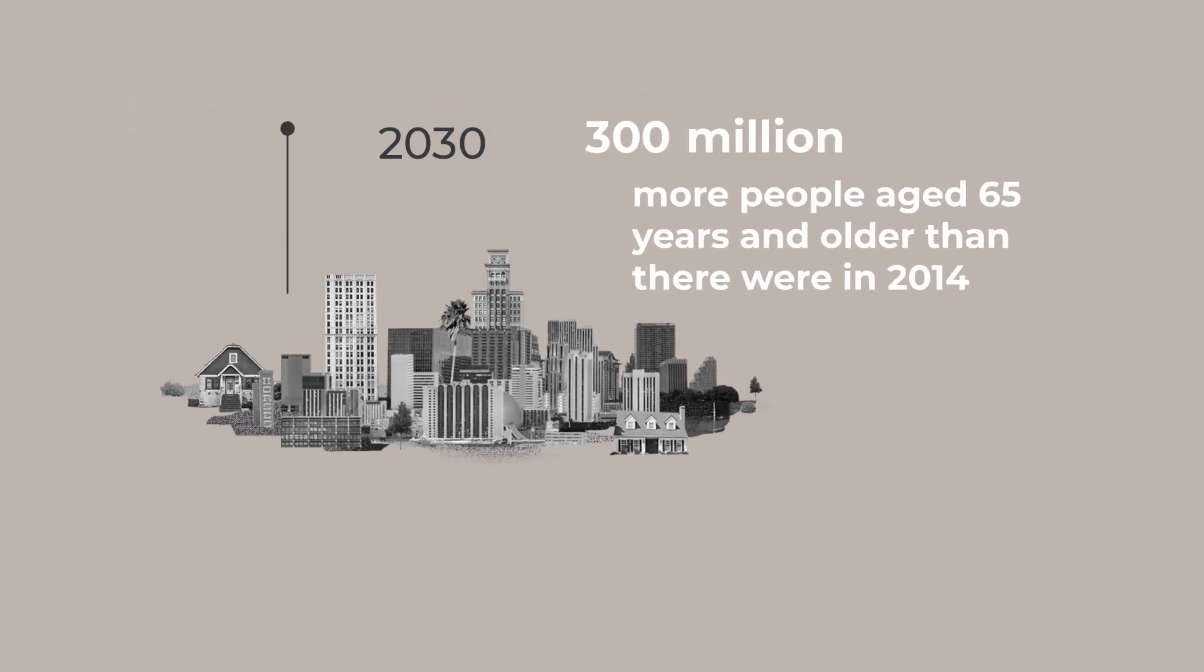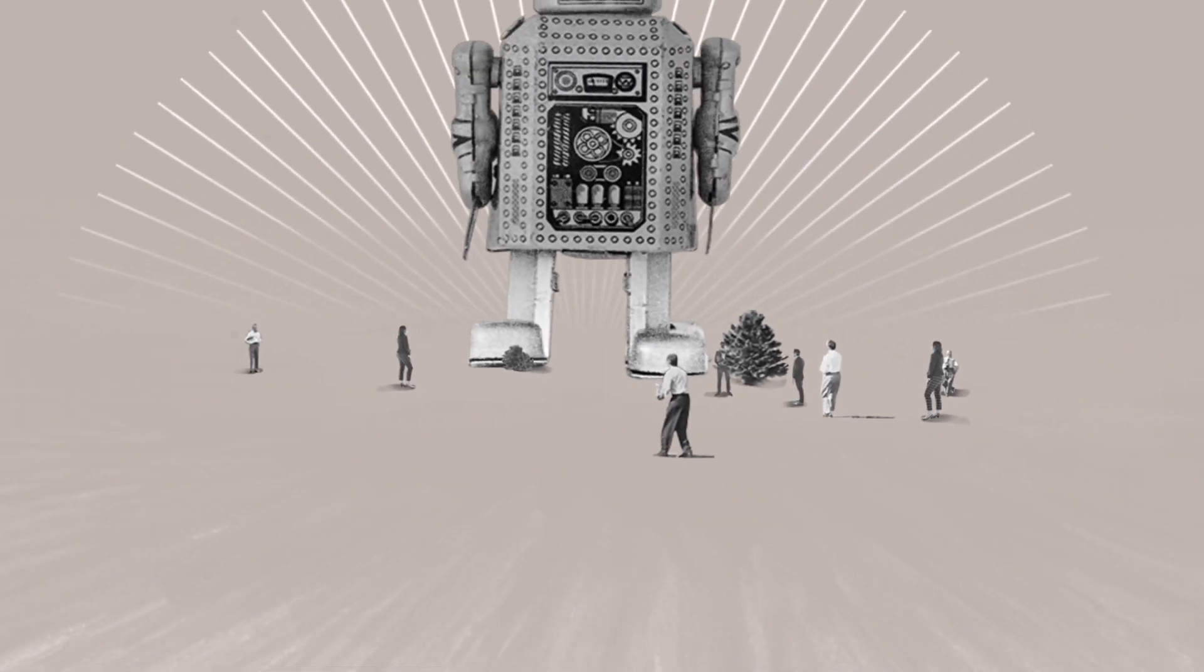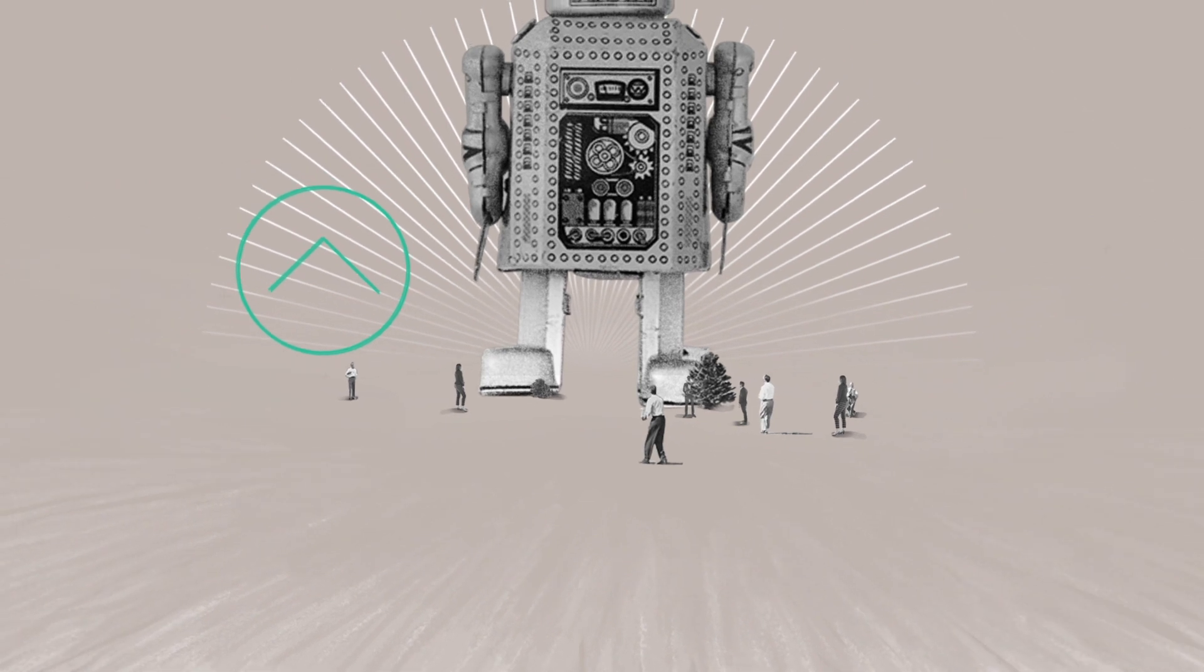By 2030, there will be at least 300 million more people aged 65 and older than there were in 2014. And it's in those countries with aging populations that automation is growing fastest.